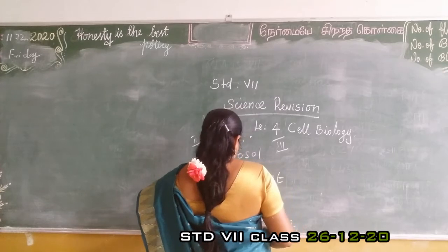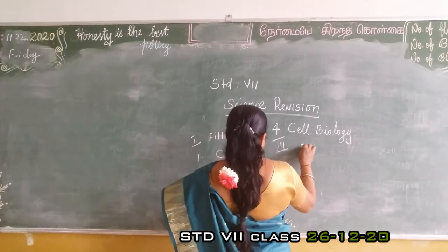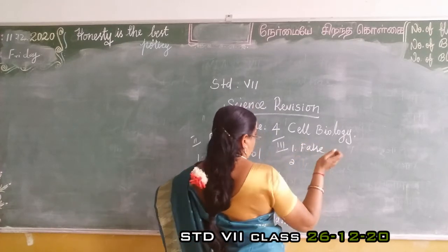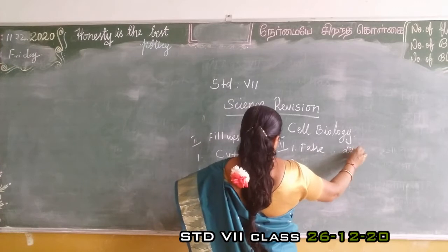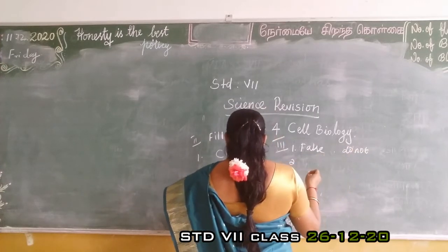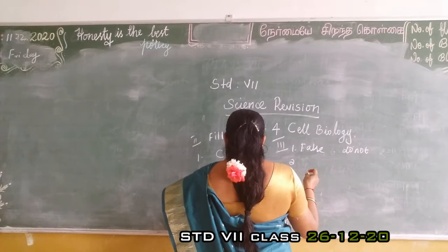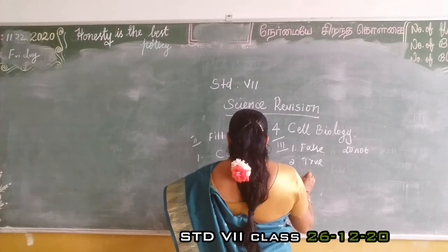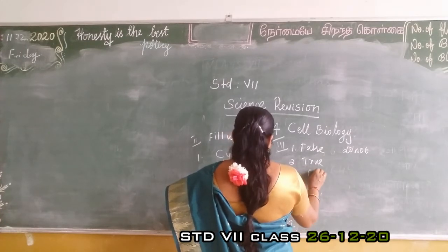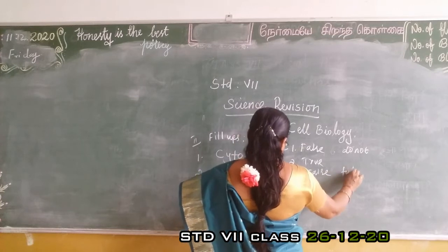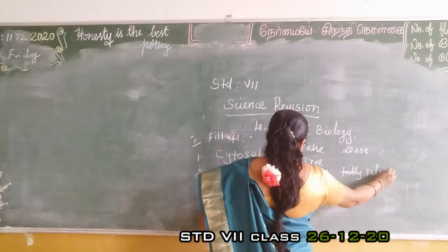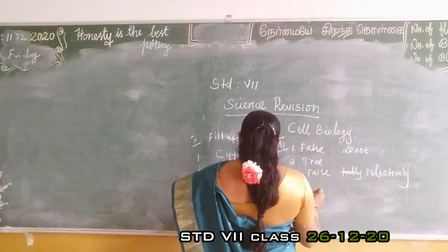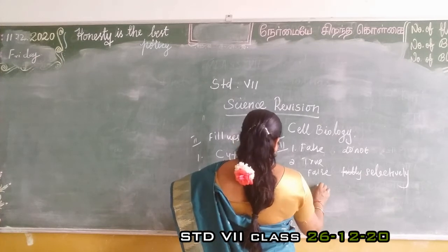True or false recap. First: animal cells have a cell wall — false; animal cells do not have a cell wall. Second: Salmonella is a unicellular bacteria — true. Third: cell membrane is fully permeable — false; it is selectively permeable. Fourth: only plant cells have chloroplast — true.